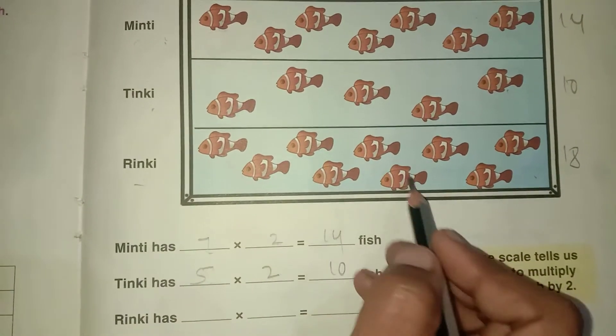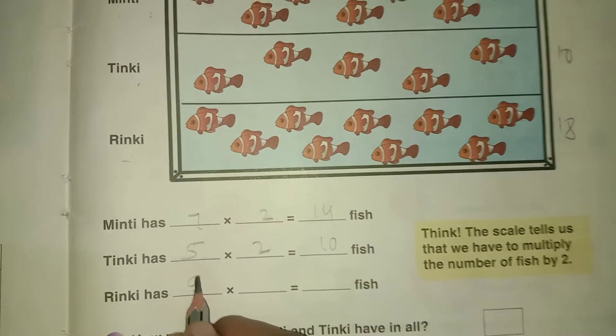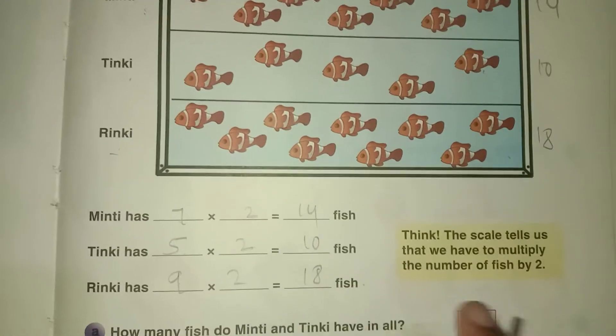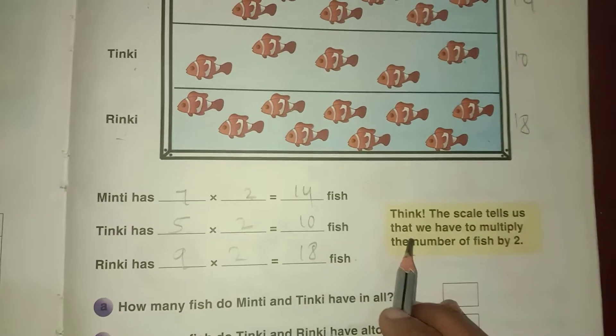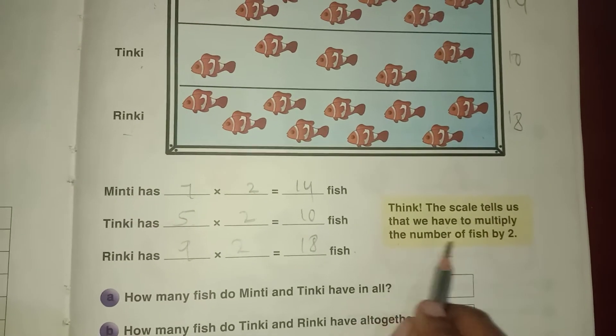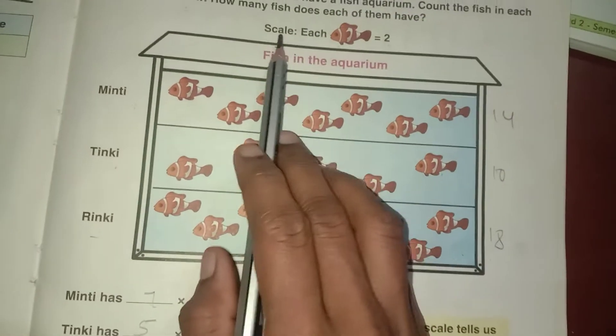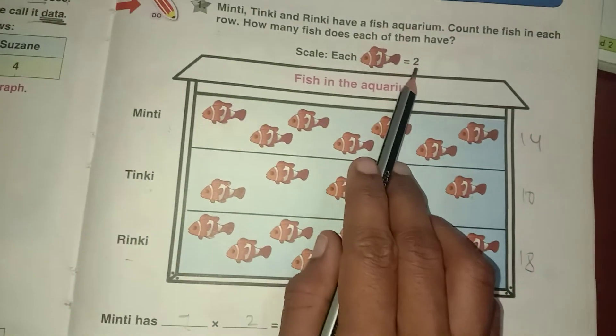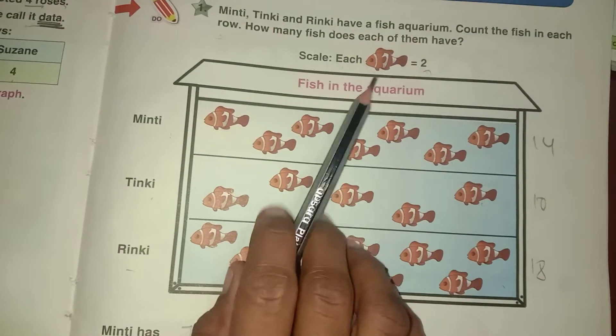The scale tells us that we have to multiply the number of fish by 2. This tells us you have to multiply by 2. Multiply by 2 to the number of fishes.